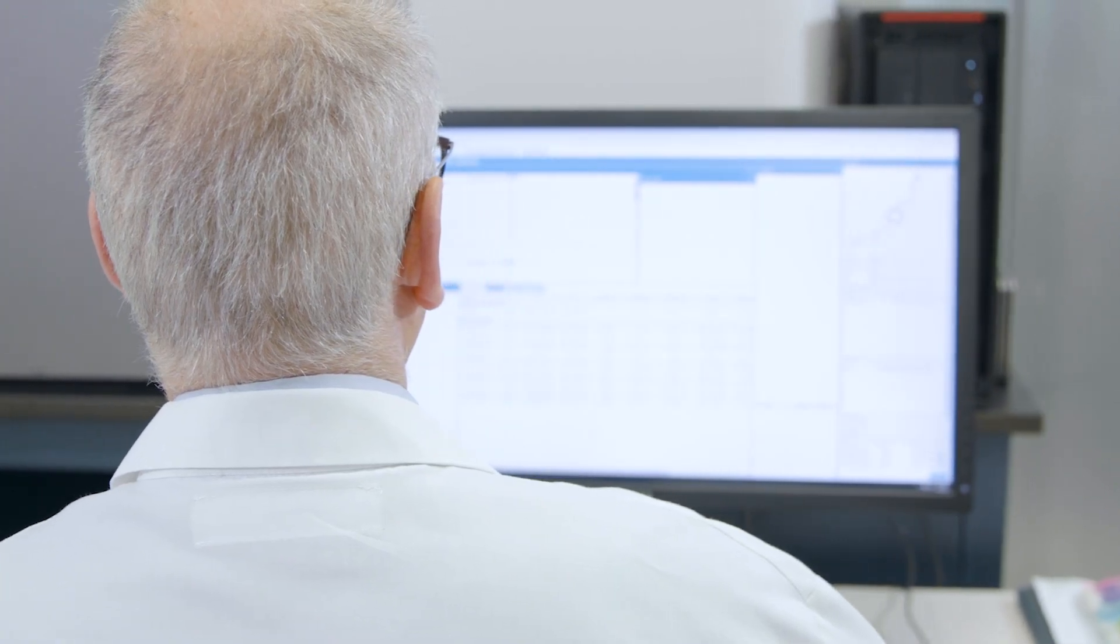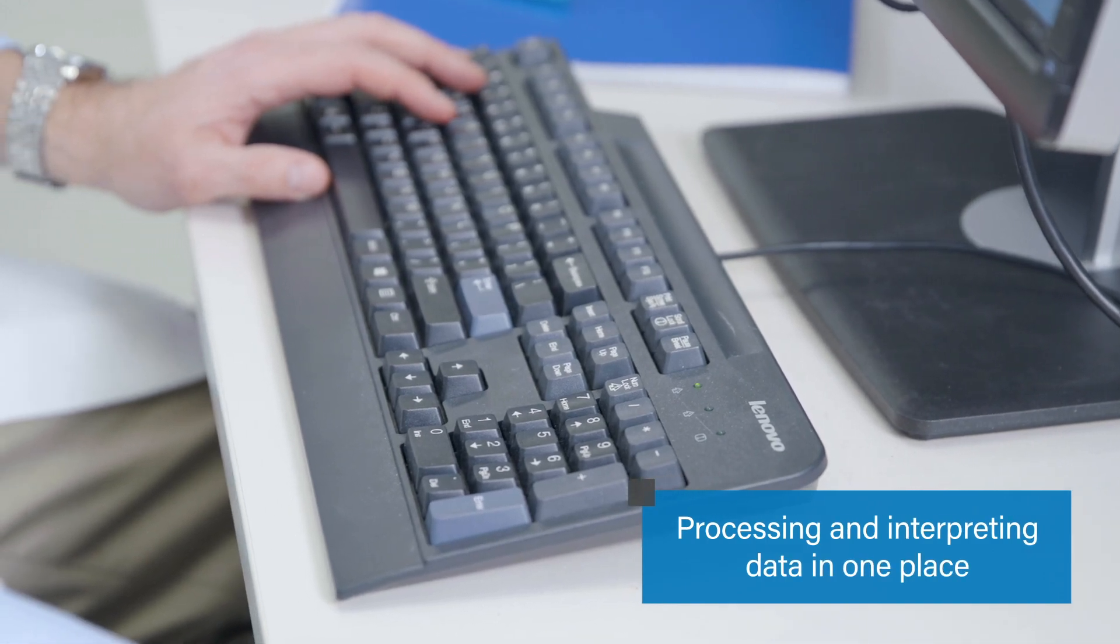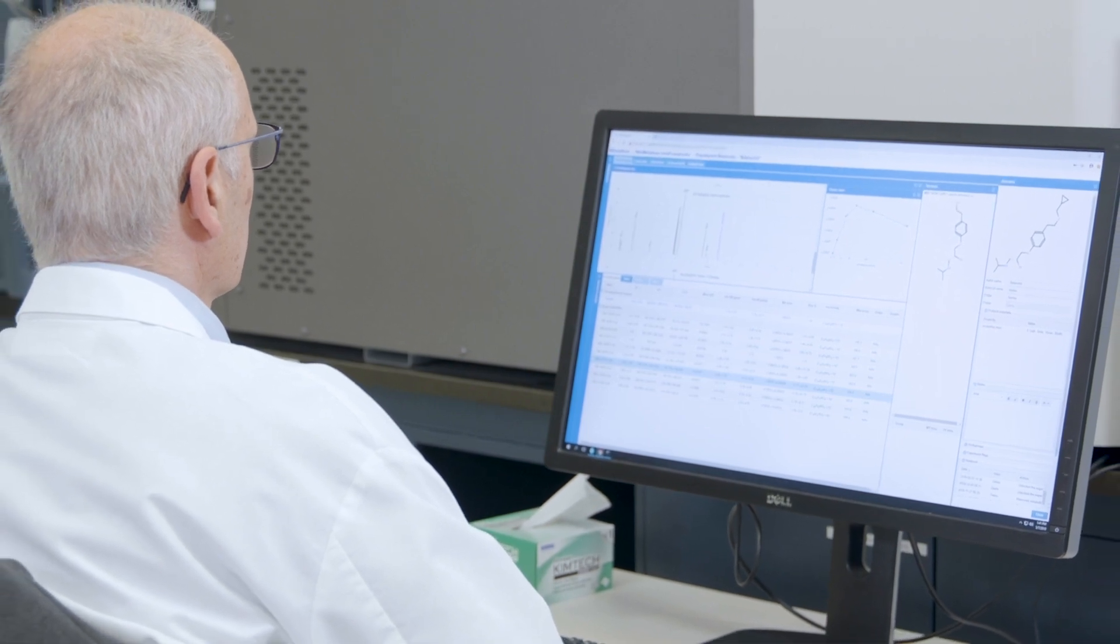Both Mass MetaSite and Web MetaBase are able to process and interpret HDMSE data and make full use of CCS values when comparing and rationalizing outcomes across studies.